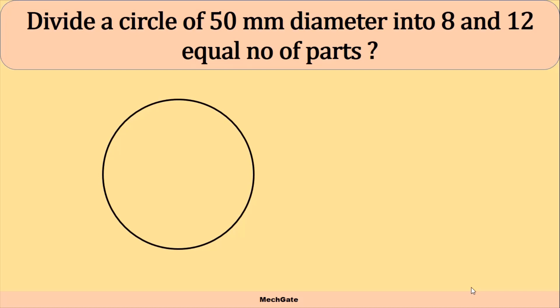First we will draw the circle having the radius equal to 25. Along with the circle we will also draw its center line — a perpendicular line, one horizontal and one vertical. This center line will cut the circle at four points. Now using these four points we will divide the circle into 12 equal parts. We know the angle included by the whole circle is 360 degrees, so if we divide 360 by 12, each angle will be 30 degrees.